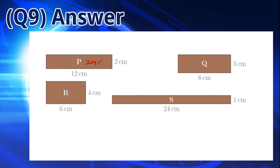Rectangle Q has an area of 3 times 8 which is 24 cm squared. Rectangle S has an area of 1 times 24 or 24 cm squared. Rectangle R also has an area of 24 cm squared. All of these rectangles have an area of 24 cm squared, so the answer is E.